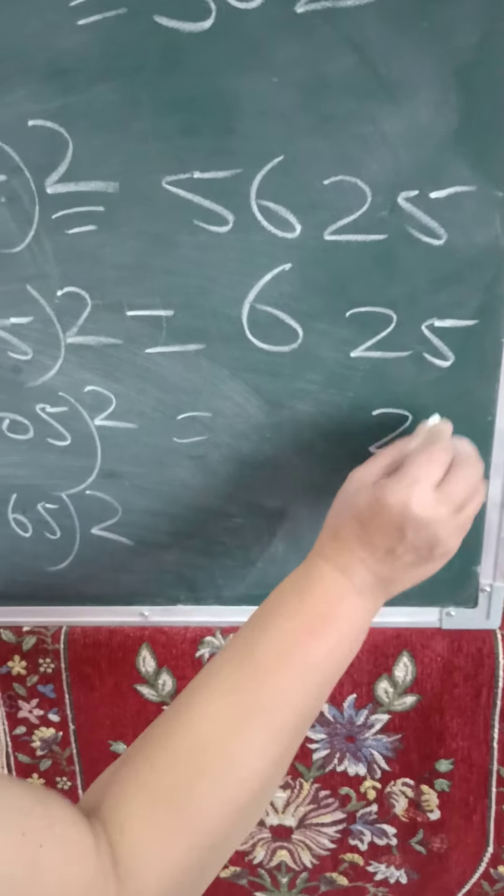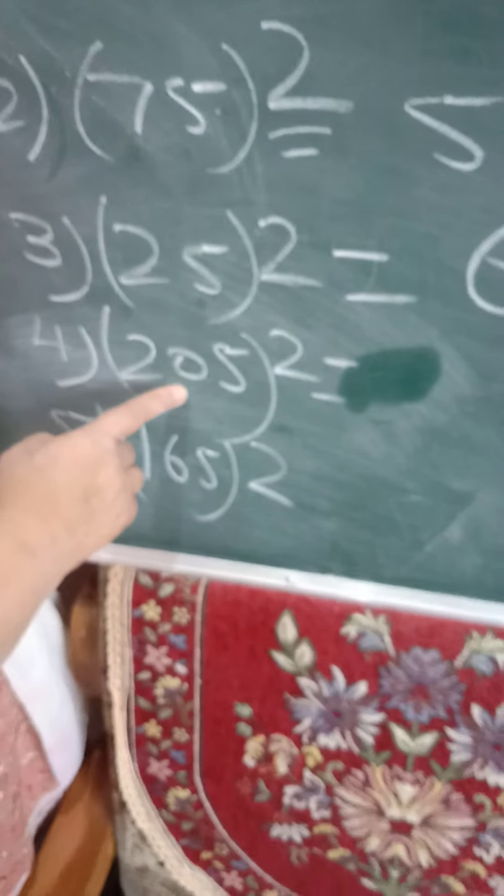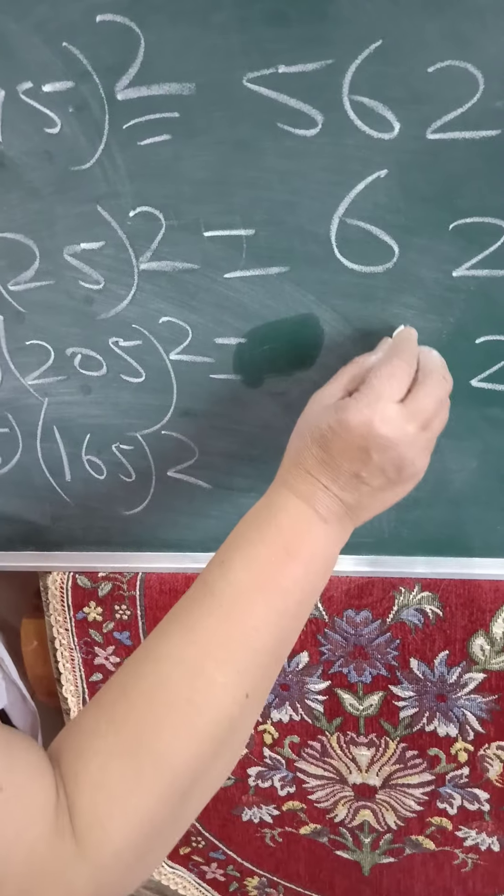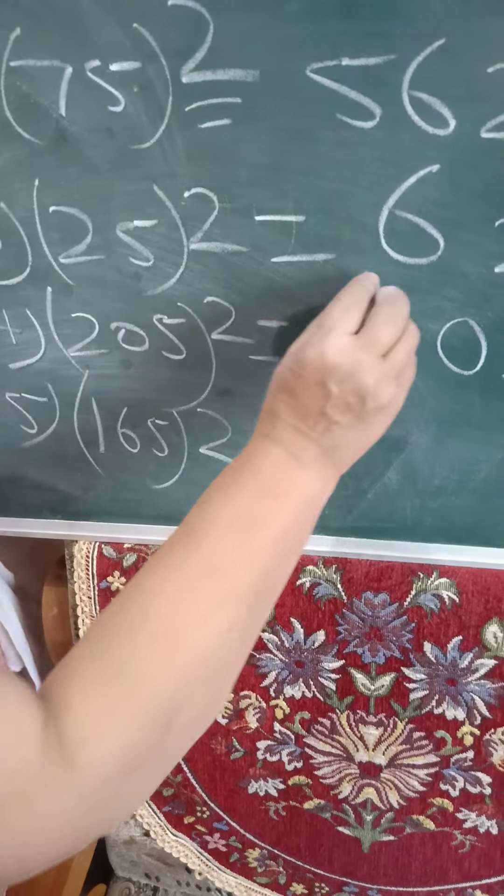5, 5 is 25. 20 into 21. 20 into 21. 0 you can put as it is. 21, 2's are 42.